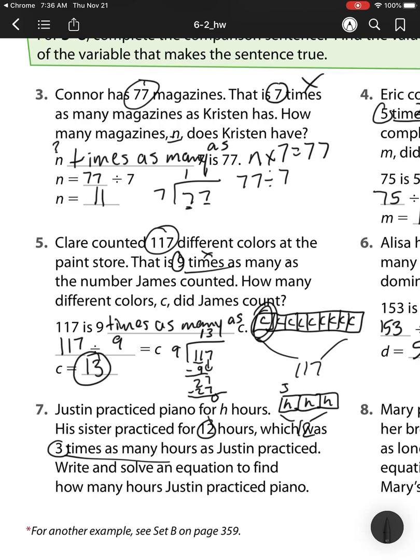Write and solve an equation to find out how many hours Justin practiced. Well, I know I'm going to follow this format that I've been doing for the other practice problems if I'm completely stuck. But I know 12 is equal to 3 times h. And I got that from this equation. So now, what does h equal? Well, I know that 3 times 4 is equal to 12. So h is 12 hours.